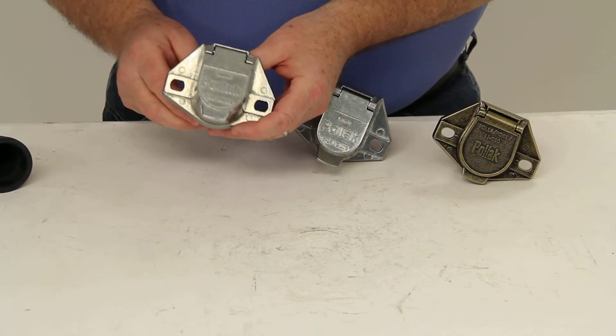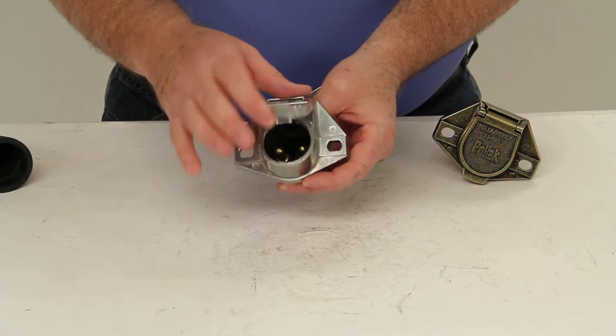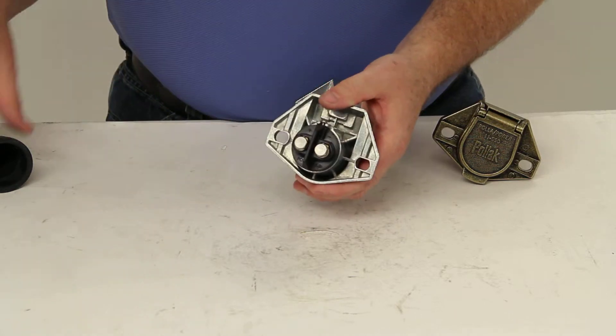And the last one we have is the PK12801. This is the two-pole vehicle end socket, and again there's your wire connections.